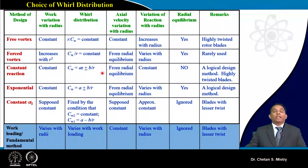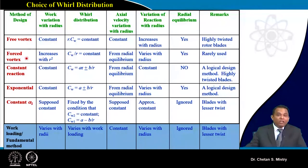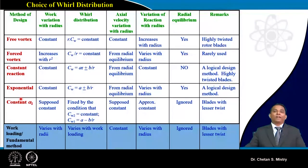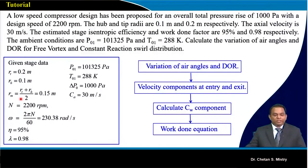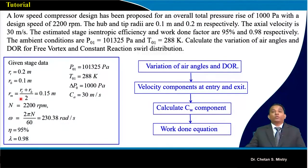It is the designer's choice to meet special requirements; based on that, they select and finalize a design approach. There is no unique method — you have multiple choices when doing your design. With this background, let us solve a numerical that will give you an idea of how to approach different design concepts. A low speed compressor needs to be designed to have an overall pressure rise of 1000 Pascal with a design speed of 2200 rpm.